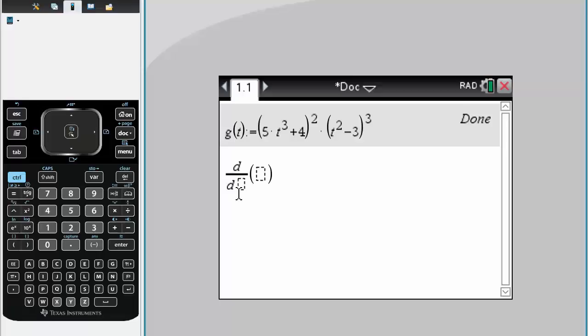We simply write DT and then we write G(T) like this. Simply hit enter and there you have our derivative of G(T). And that's it.